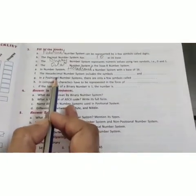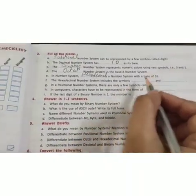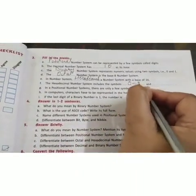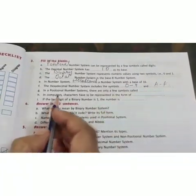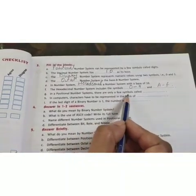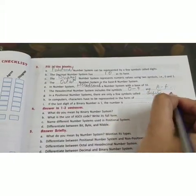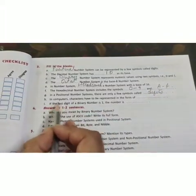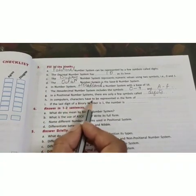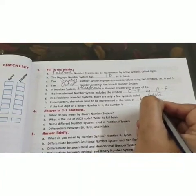The hexadecimal number system includes symbols 0 to 9 and A to F. In positional number system, there are only two symbols called digits. In computer, characters have to be represented in the form of ASCII codes.